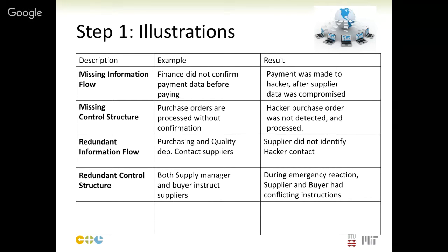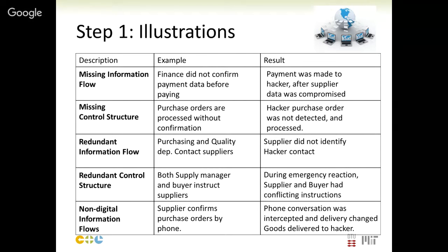We could also have redundant control structures — for example, where the supply manager and buyers instruct suppliers in parallel without coordination, leading to conflicting instructions during emergency reactions. All of these can be exploited by hackers. Another finding could be the identification of non-digital flows that we would want to digitize — for instance, suppliers confirming orders by phone or fax, which still happens in many companies especially in the Far East. Phone conversations were intercepted and deliveries were changed so goods were delivered to the hacker. All these illustrations can be derived from a simple but explicit representation like the one we are proposing.